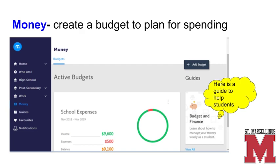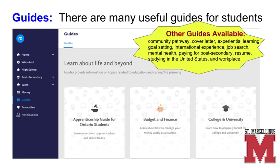Check out the suggested guide for this section, Budget and Finance. My Blueprint includes many useful guides for students. Here is a list of all the guides available through My Blueprint. In addition to the guides for Apprenticeship, Budget and Finance, and College and University that you can see here on the screen, there are also guides for Community Pathway.